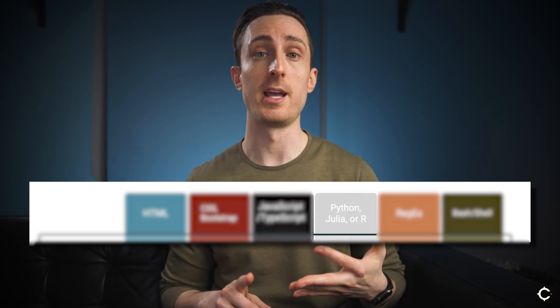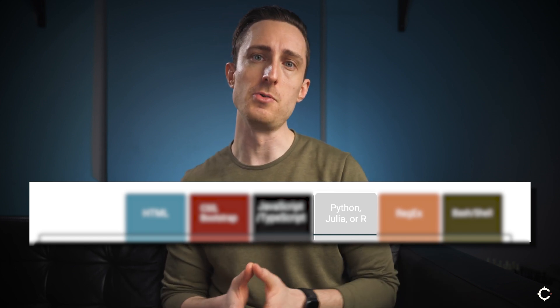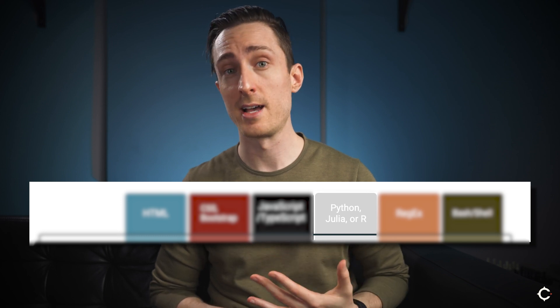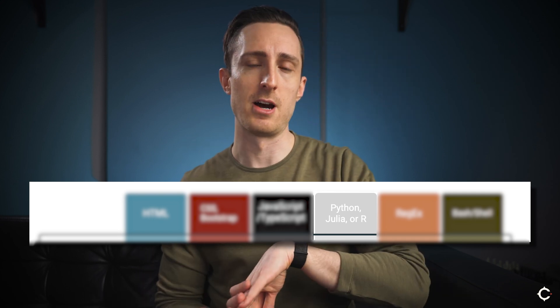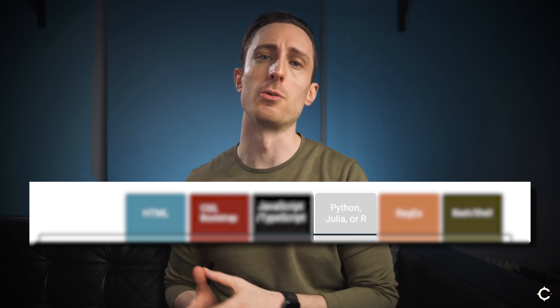Next we're talking about Python, Julia, and R. These programming languages can also be used like JavaScript for making applets, but what makes them a little bit different is that a lot of their users are using them for statistical analysis, machine learning, and things like that. Python is also very frequently used for automating tasks. If you have the need to do analysis on large, large sets of data, one of these three languages will probably be more useful than JavaScript.